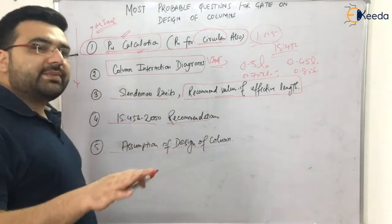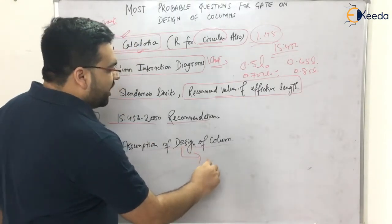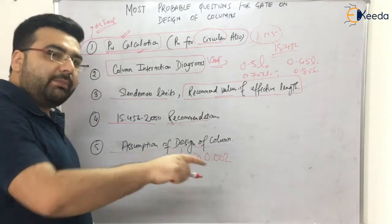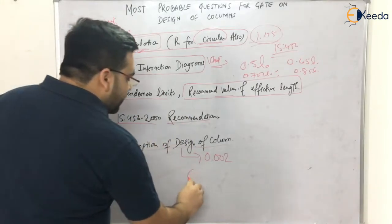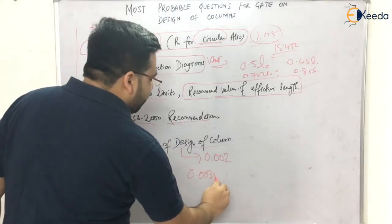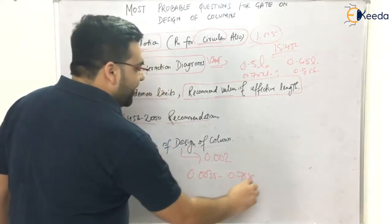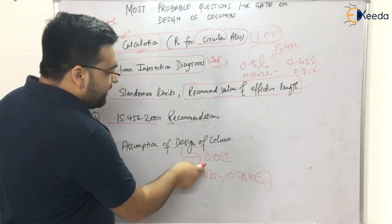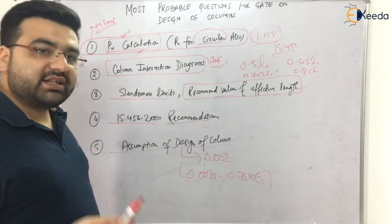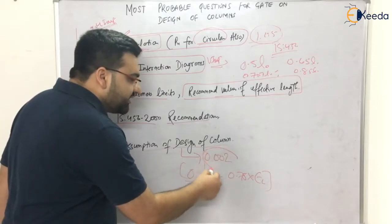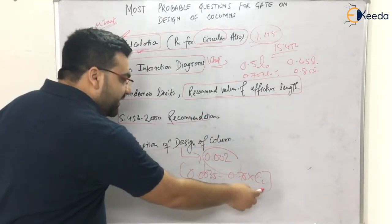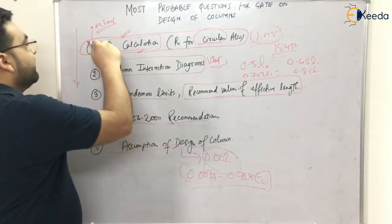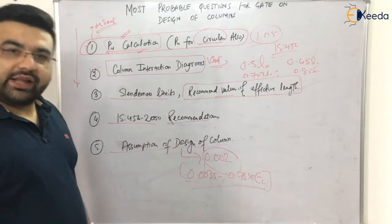The last topic is the assumptions in the design of columns. Two important assumptions: first, if it is an axially loaded column, the maximum strain is 0.002; second, if the column has both axial load and bending, the strain is 0.0035 minus 0.75 times the strain in the least compressed fiber. Questions based on these assumptions have already appeared in GATE examinations.